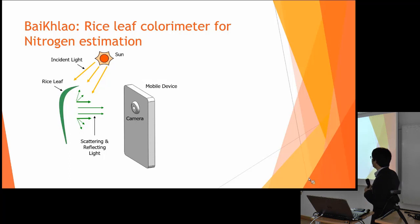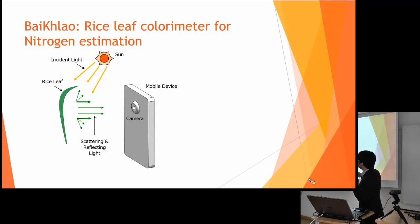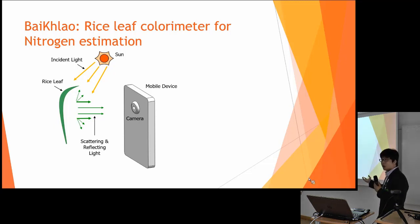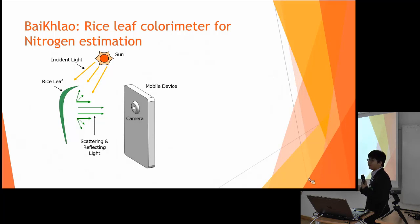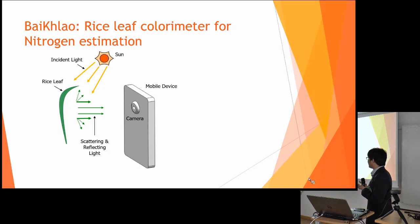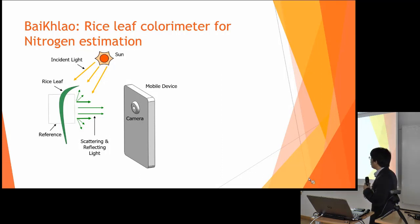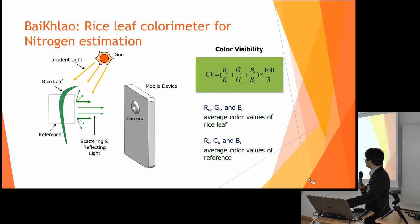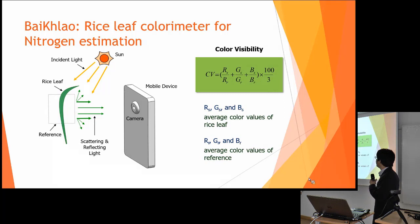The model works like this: for the rice leaf, which is green, we use incident light from the sun and our mobile phone camera to receive the scattering light and the transmitted light from the leaf. However, we cannot know the intensity of the light reaching our camera, so we need a reference. For our reference, we use a plain A4 paper, and we calculate the variance using this equation.